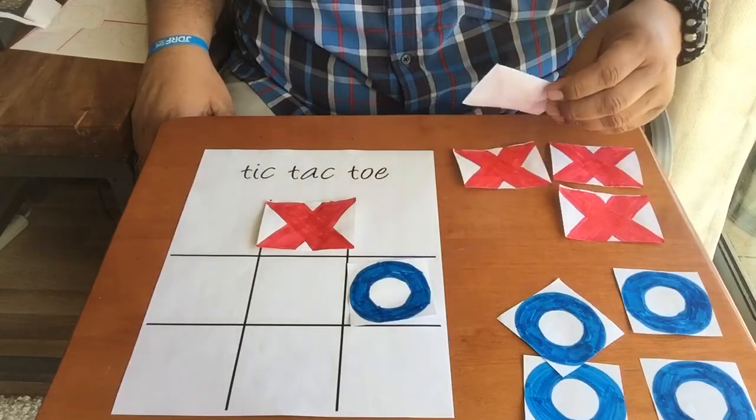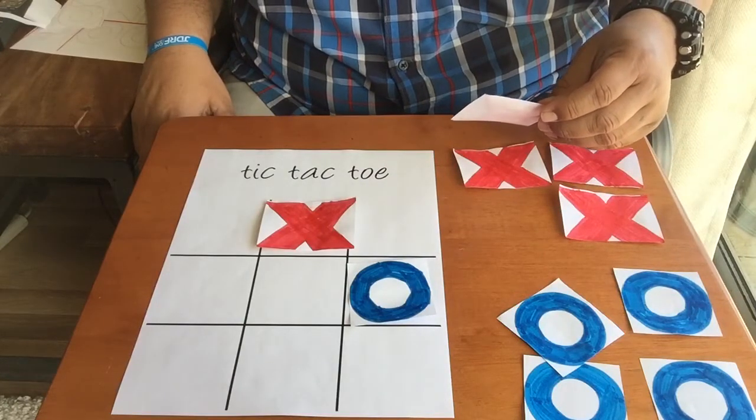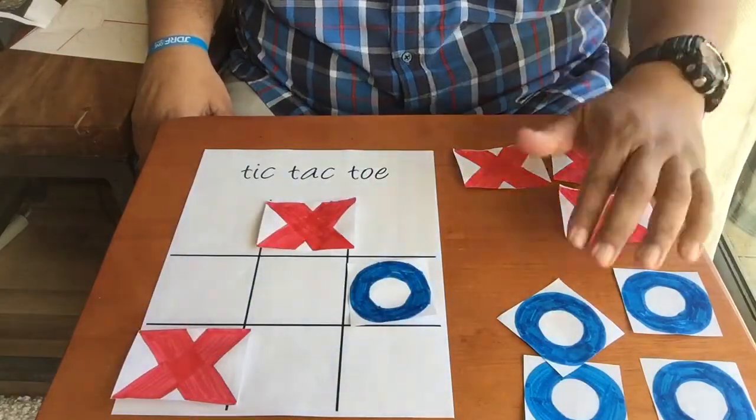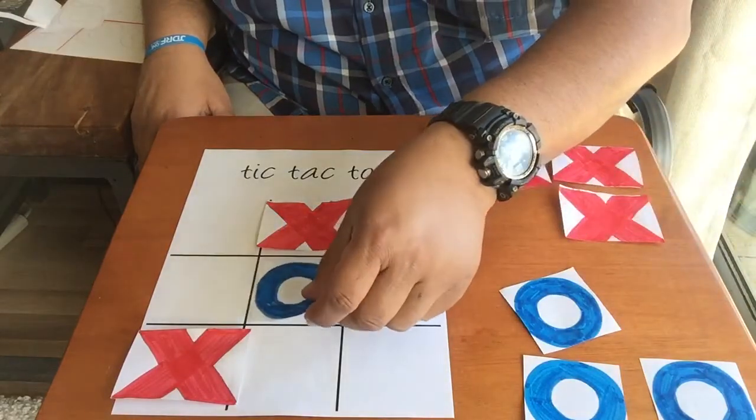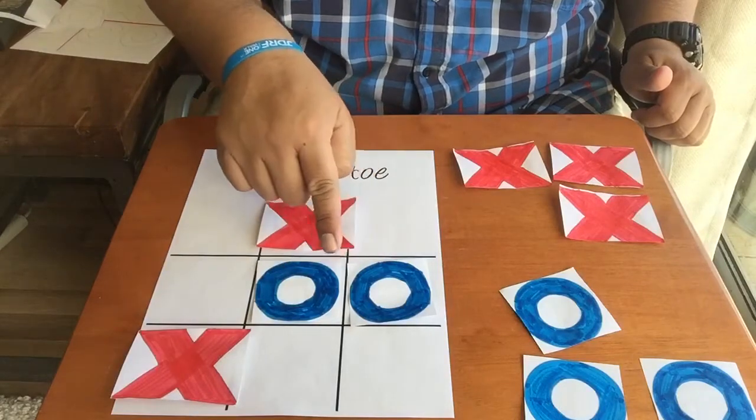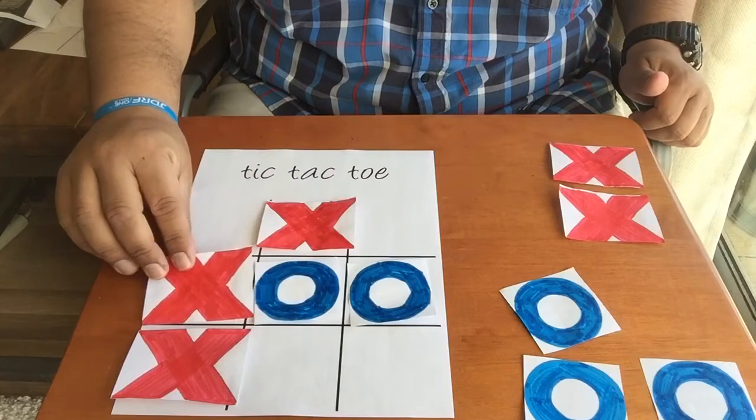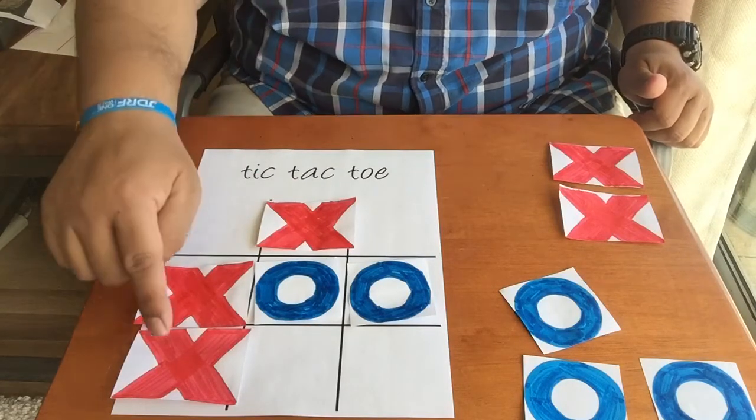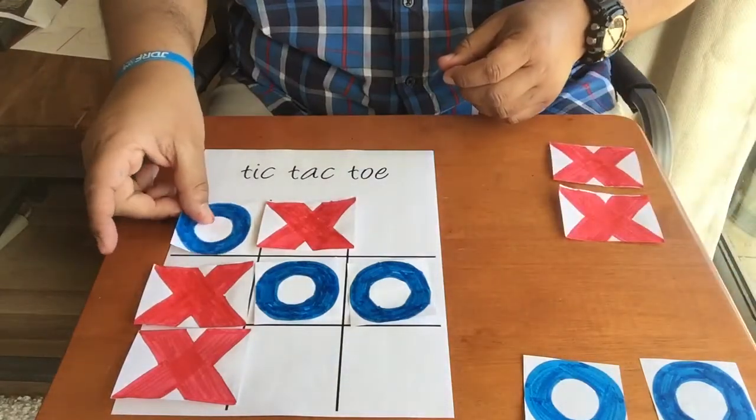Now it's going to be X's turn. X is going to try to be a little bit sneaky. He's going to try to go over here in the corner. Now for Blue, Blue's going to do a great job. He's going to go right here in the middle. And look there's two blues in a row. X doesn't want him to win. So X is going to block him. Now the O needs to block the two X's to go there.